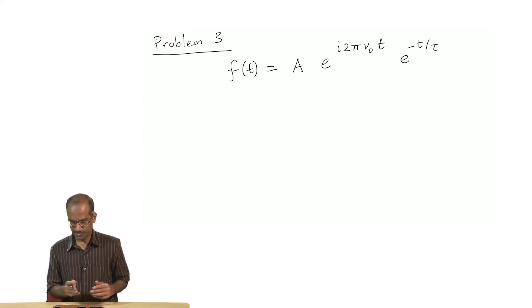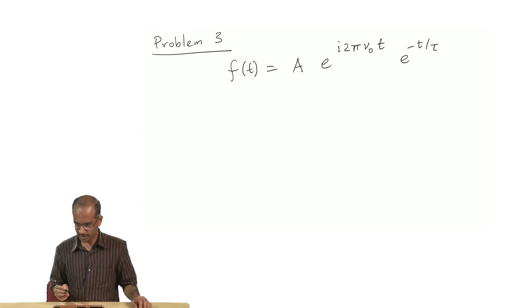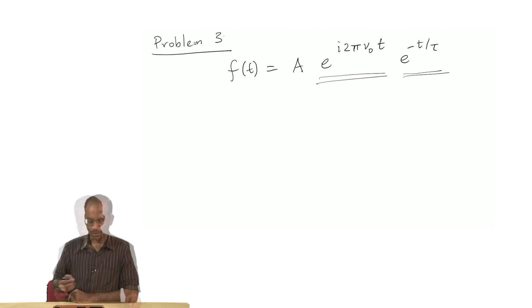The problem here is I have f of t which is a product of two exponential functions: one is e^(i2πν₀t) and then an exponentially decaying function in time, tau is some time constant. You would notice that this is simply the solution of a damped harmonic oscillator.